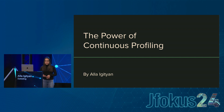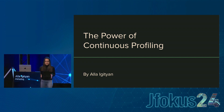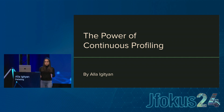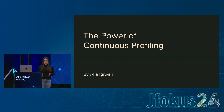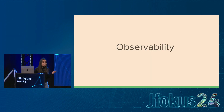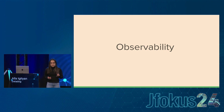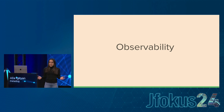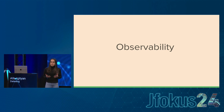Before entering the world of observability I was a software engineer, a Java developer, and like a lot of you I used different approaches to ensure the optimal performance of my code. To do this we need good visibility into our applications, so we have observability — metrics, traces, and logs — which are often referred to as the three pillars of observability. Each serves a unique purpose, but collectively they provide deep insights into the performance of your systems.